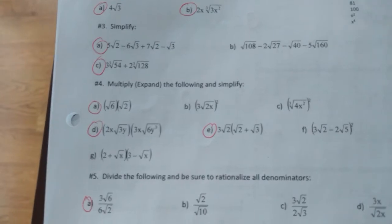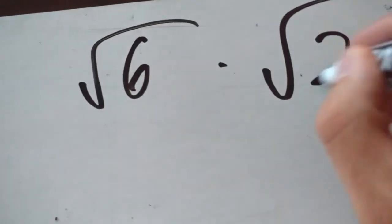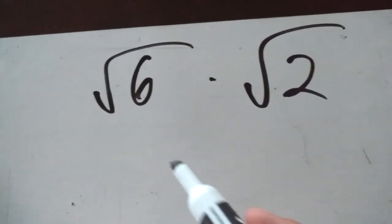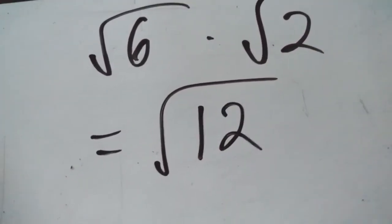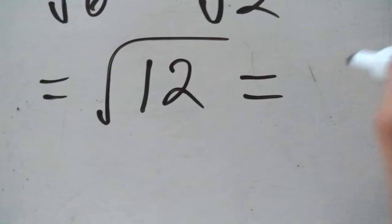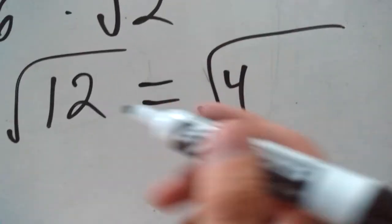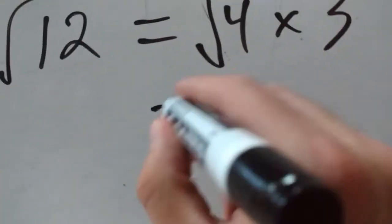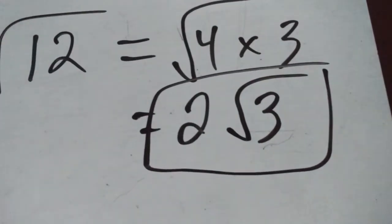Question 4: multiply radicals. For part A, square root of 6 times square root of 2 — just multiply the radicands to get square root of 12. But since it says simplify, the biggest perfect square in 12 is 4. So it becomes square root of 4 times 3, and square root of 4 is 2, giving us 2 root 3.